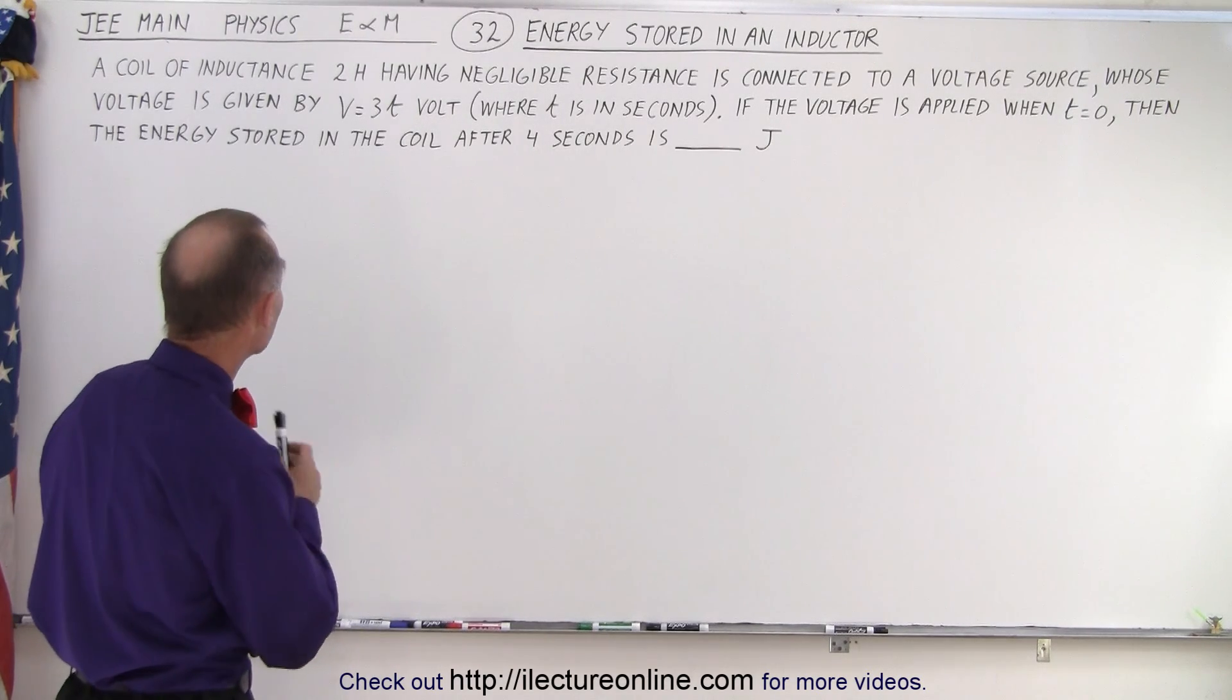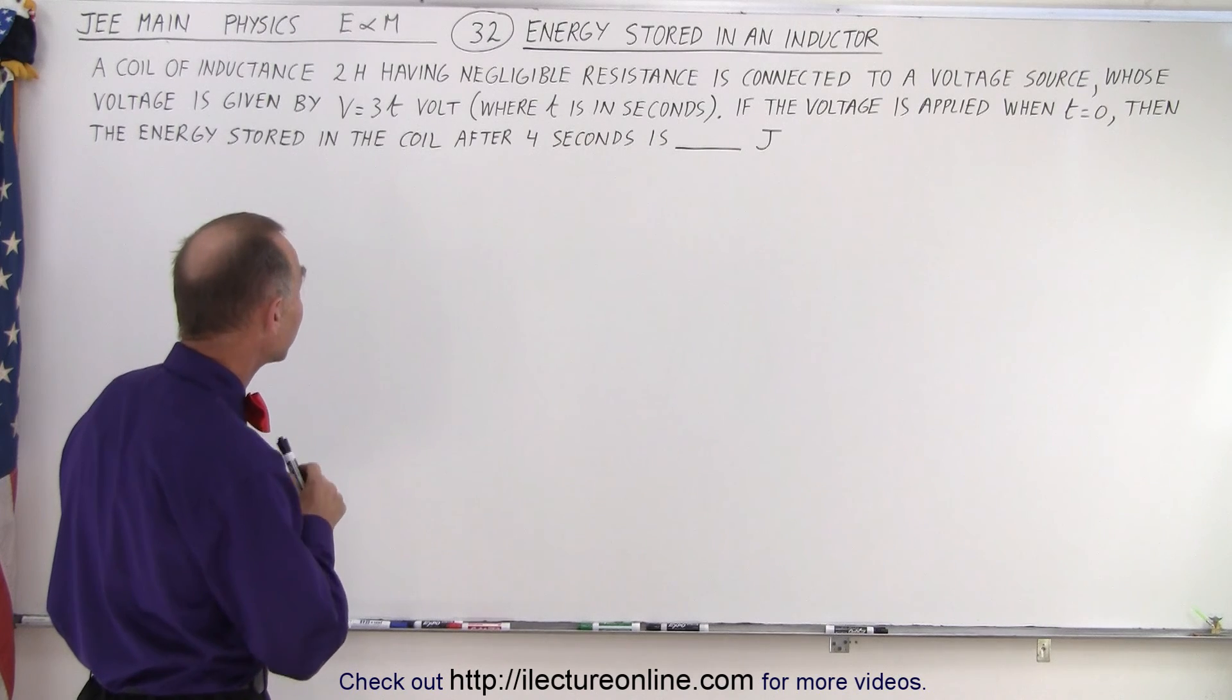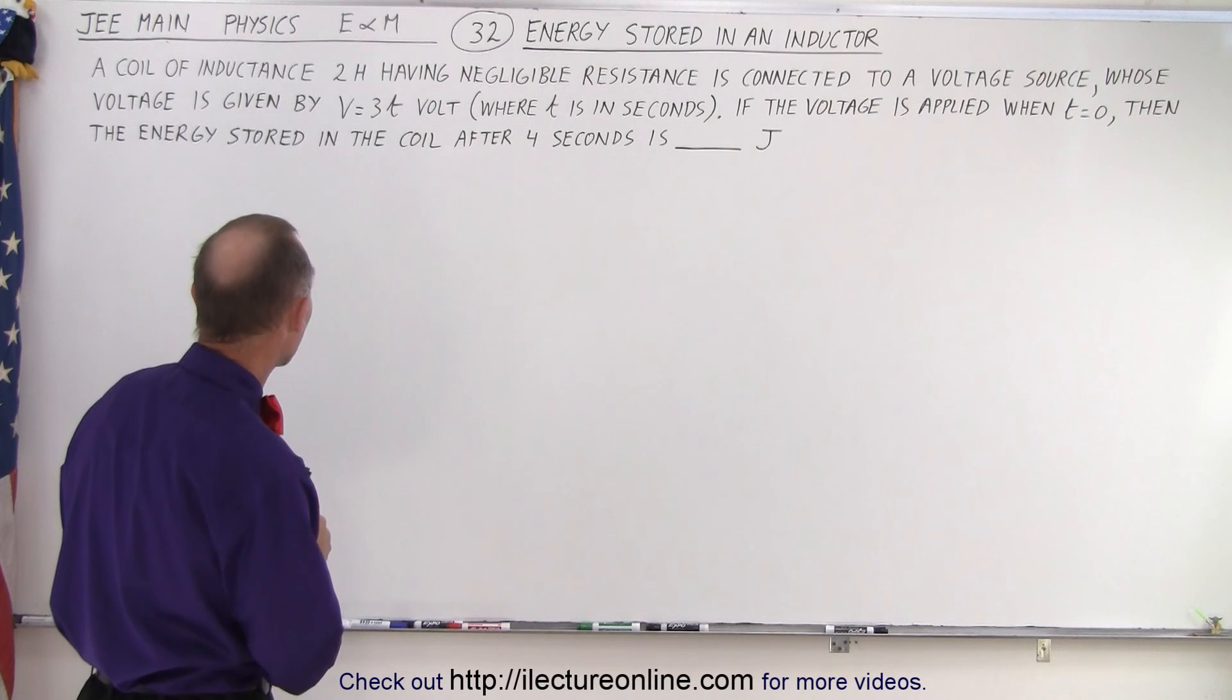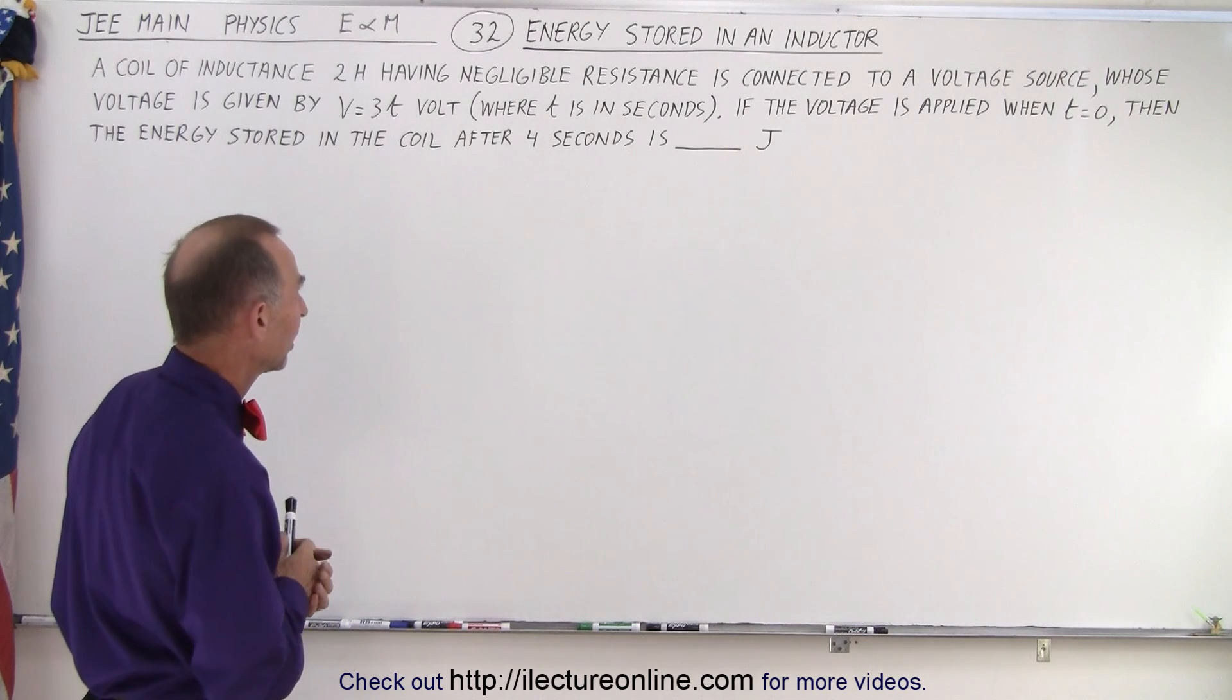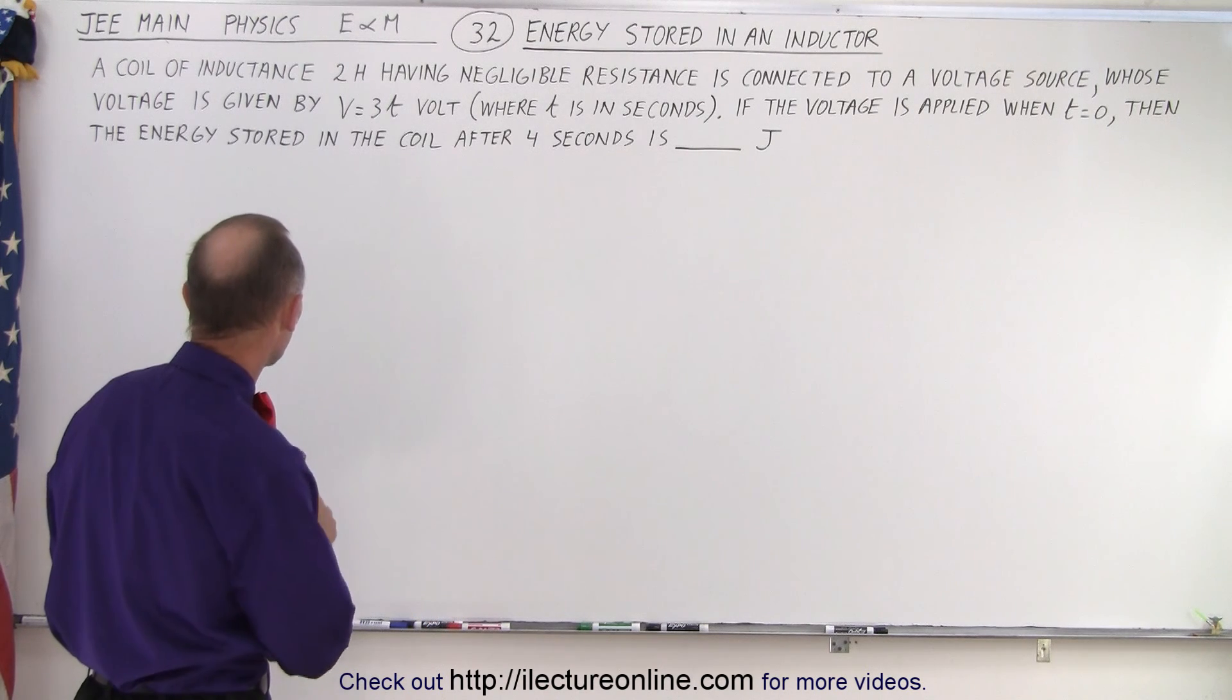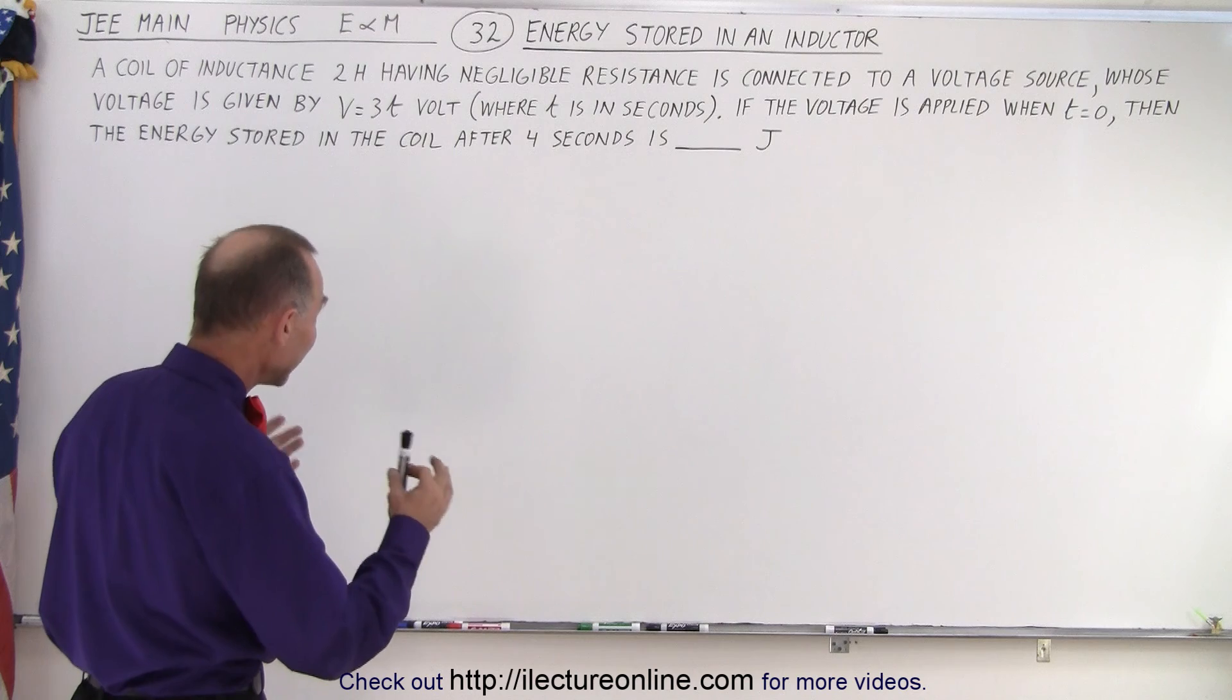A coil of inductance of two Henrys having negligible resistance is connected to a voltage source whose voltage is given by V equals 3T volts, where T is in seconds. If the voltage is applied when T equals zero, then the energy stored in the coil after four seconds is...